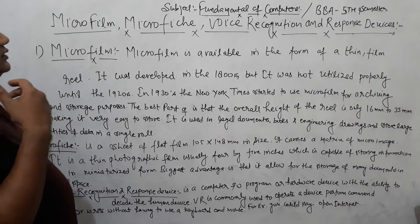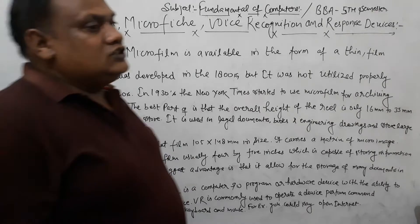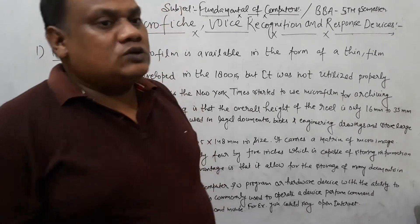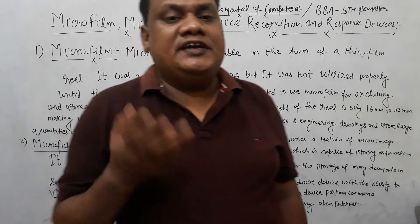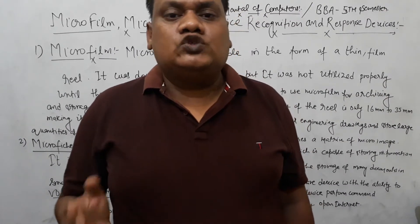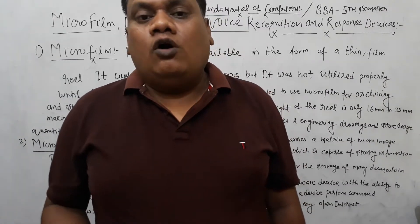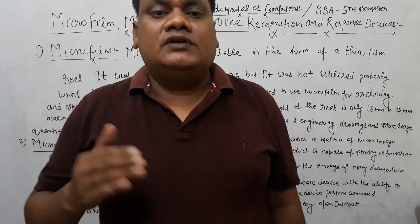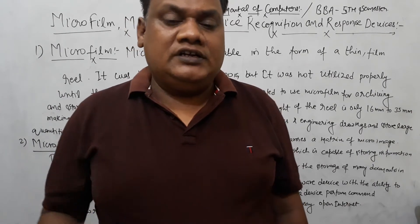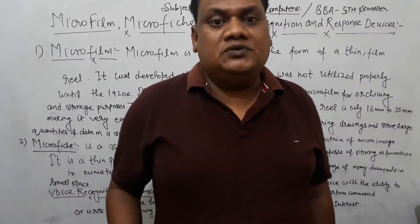Today's topic is for VBA fifth semester — input device and output device. First of all, we have Unit 2. We have topics that we have to cover.